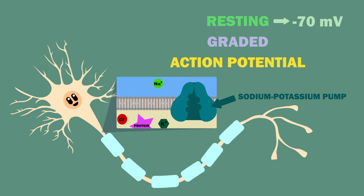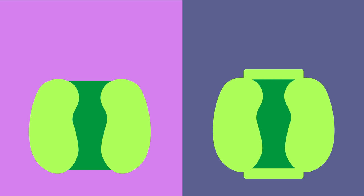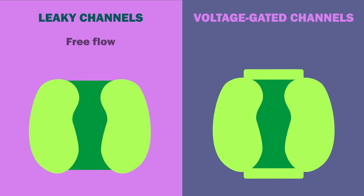Now, there are several kinds of channels found in cell membranes, allowing for the transport of substances from one side to the other. Two kinds are important in the context of action potentials: leaky channels and voltage-gated channels. Leaky channels allow the free flow of substances through them. Voltage-gated channels are only open at certain voltages.